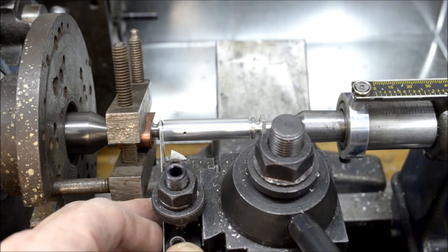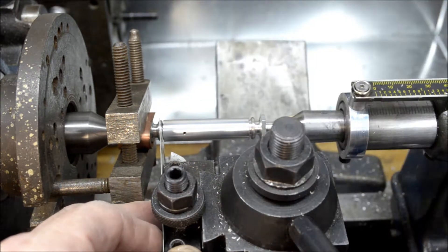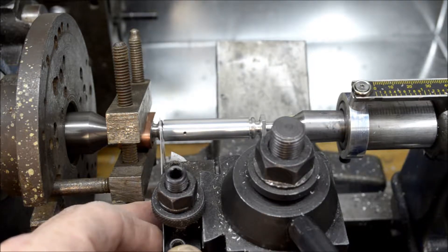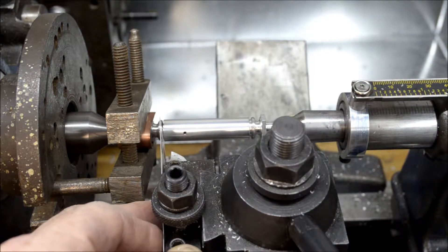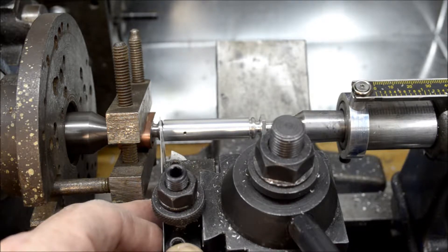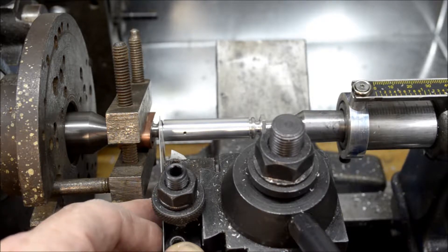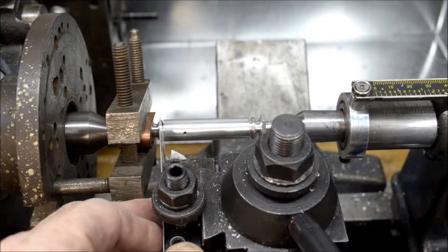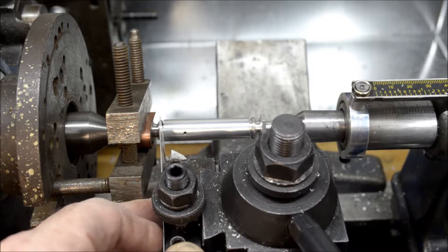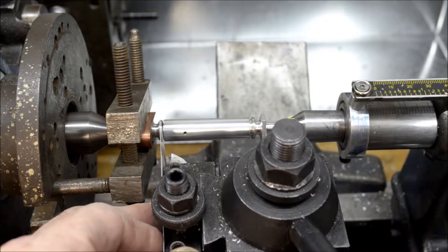I got a playing card I cut down. I got it resting up against the tool holder, and I'm just holding it, and I'm moving my cross slide in just until the card starts to buckle, which is right about there. I zeroed out my dial on my cross slide, and I'm going to back it out two hundred thousandths.